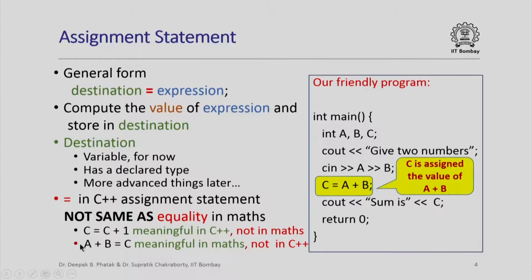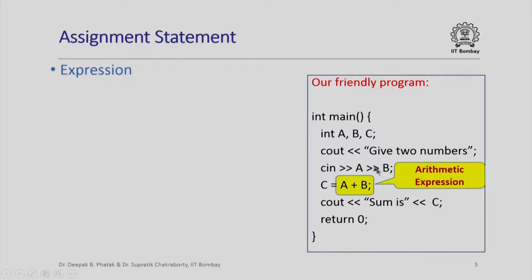Similarly, the mathematical equality 'a + b = c' is a perfectly meaningful statement in maths. However, it is not a meaningful statement in C++ because the destination of an assignment statement in C++ has to be a variable for now. The right-hand side of the equal sign, also called the right-hand side of the assignment, is an arithmetic expression.